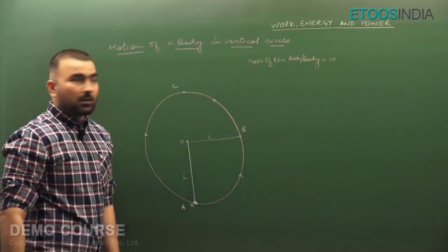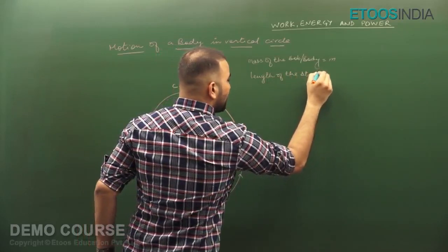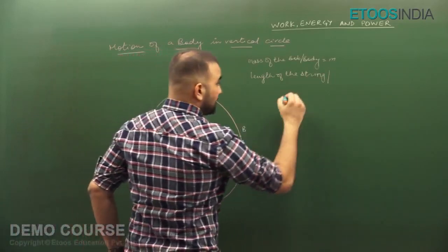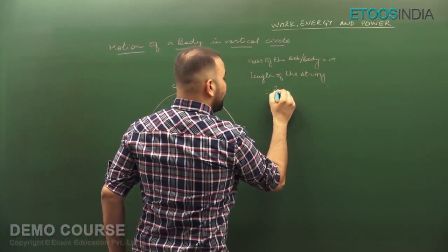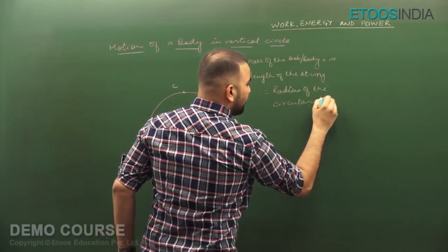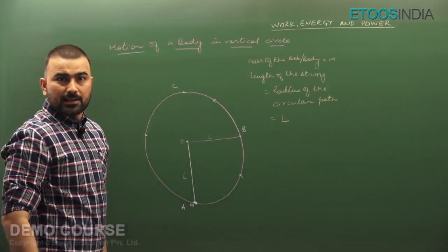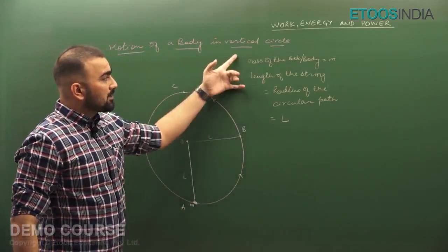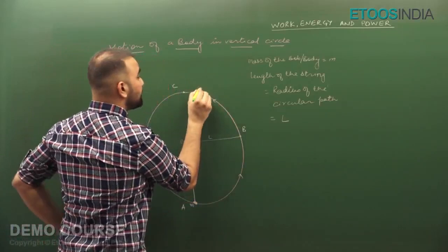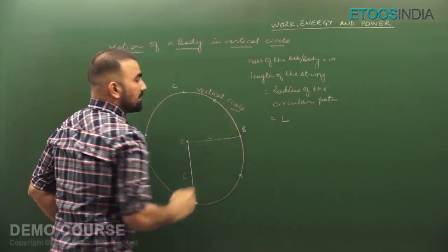The mass of the bob is equal to M. The length of the string is equal to the radius of the circular path, taken as capital L. So the mass of the body moving in a vertical circle — this is given as a vertical circle setup.